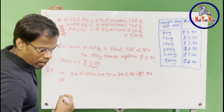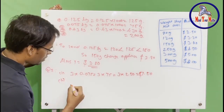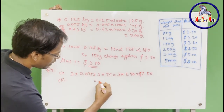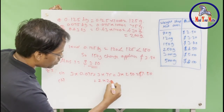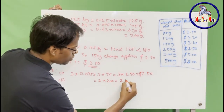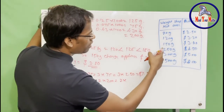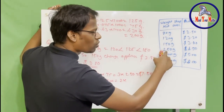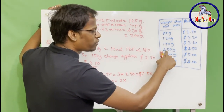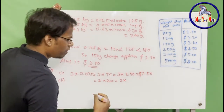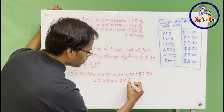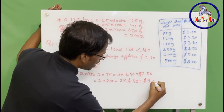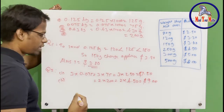The second set is two parcels of 200 grams, which is already in grams, so we go directly to the table. Two times 200 grams — 200 falls between 150 and 250, but since it is greater than 150, we go for the 250 gram charge, which is four dollars and 50 cents. Two times four dollars 50 cents equals nine dollars.